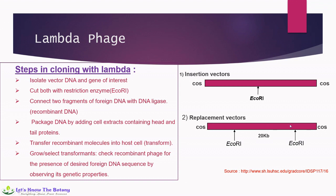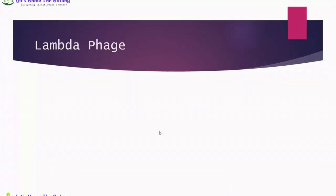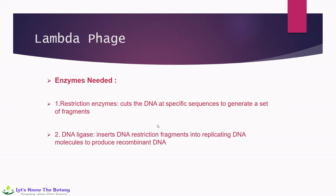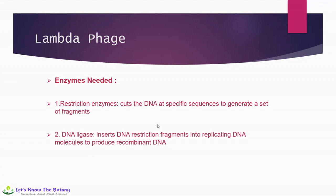Lambda phage can introduce foreign DNA of up to 20 kb in size. The enzymes needed in this particular cloning are: restriction enzyme, which cuts the DNA at specific sequences to generate a set of fragments, and DNA ligase, which is useful for inserting DNA restriction fragments into replicating DNA molecules to produce recombinant DNA.